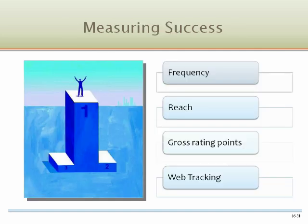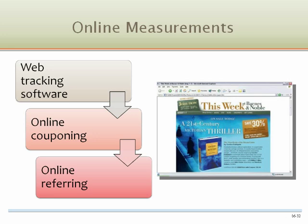After a firm has decided how to set its budget for marketing communications and its campaigns have been developed and implemented, it must measure the success of the campaigns. Every communication may be measured in terms of frequency — how often the audience is exposed to a communication within a specified timeframe — and reach, the percentage of the target population exposed to a specific marketing communication. Marketing communications managers usually state their media objectives in terms of gross rating points, which represents reach multiplied by frequency. Technology has introduced a host of new products for tracking online communications, as well as new communication formats.